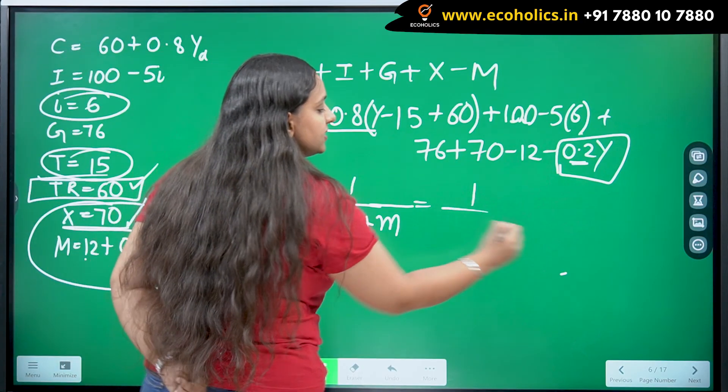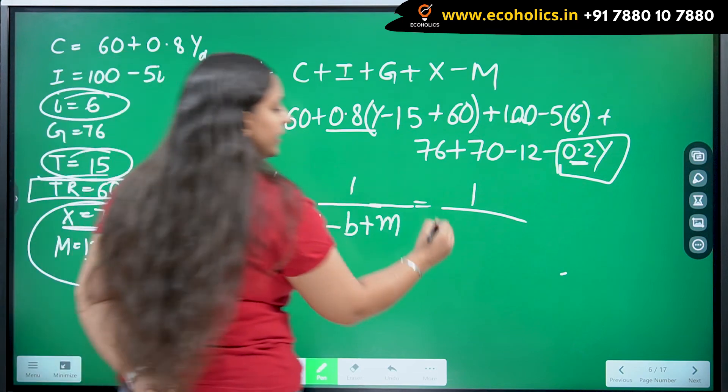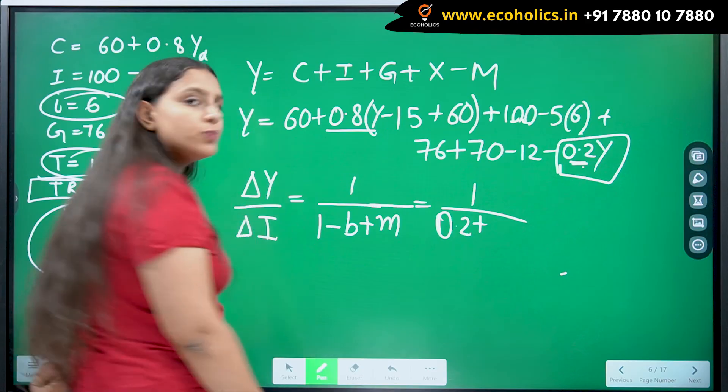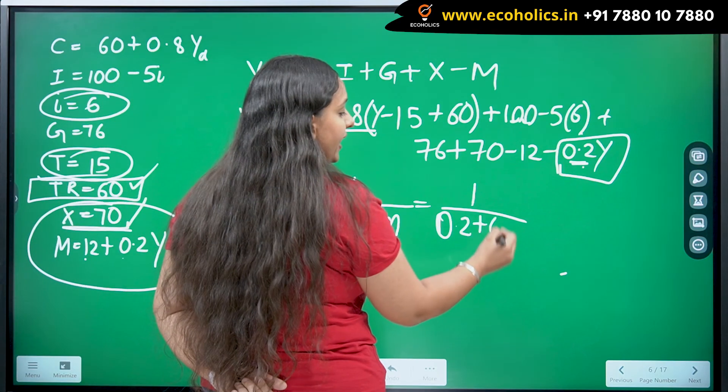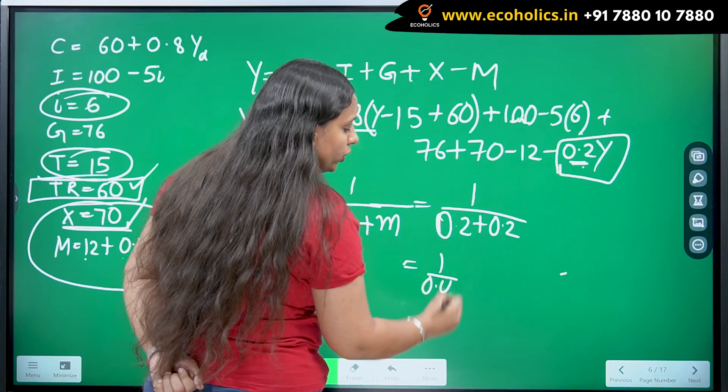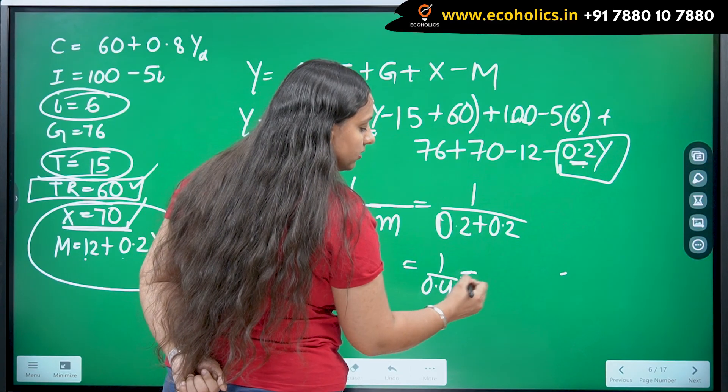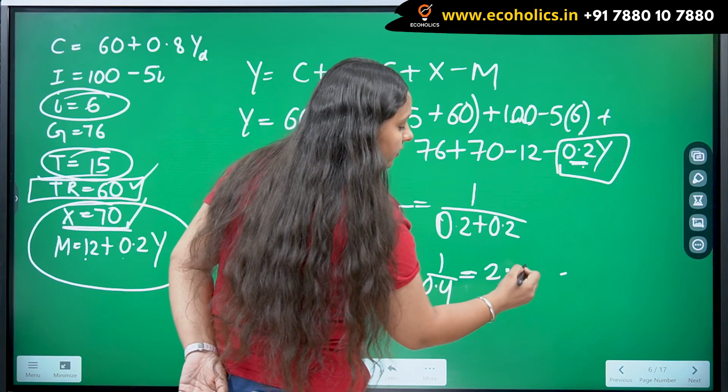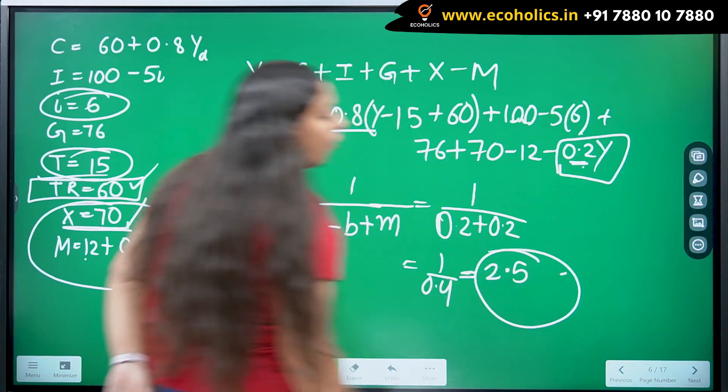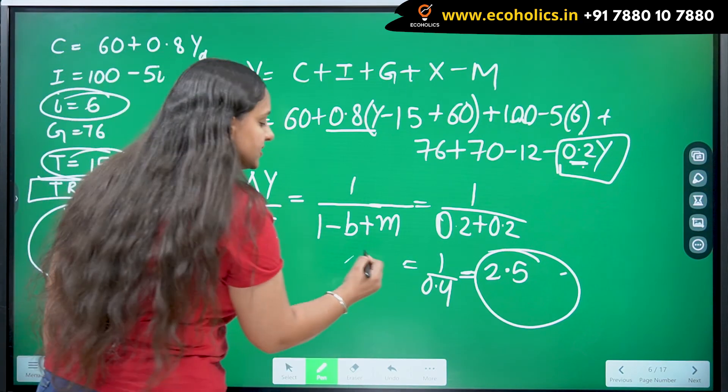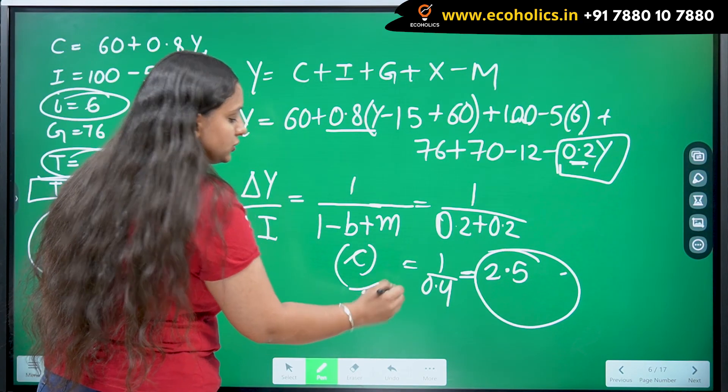If I put the value, what is the value of MPC? It's 0.8. 1 minus 0.8 is 0.2 and what is the value of marginal propensity to import? It's again 0.2. I get the answer 1 upon 0.4. I am going to get 1 upon 0.4 which will be equal to 2.5. This is the value of import multiplier or foreign trade multiplier. This is the answer to part C in this question.